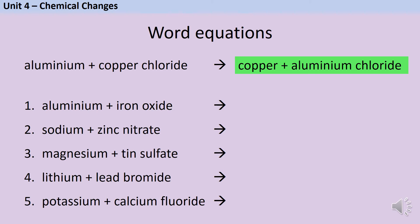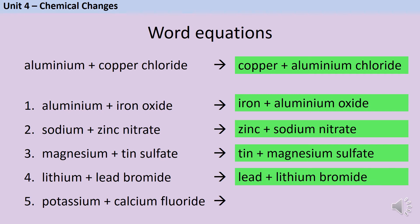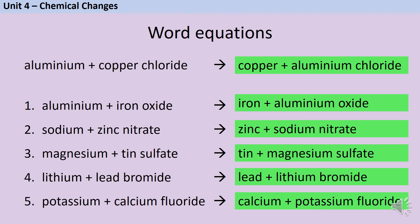Pause the video and complete each of the next five word equations. Aluminium reacts with iron oxide to make iron and aluminium oxide. Sodium reacts with zinc nitrate to make zinc and sodium nitrate. Magnesium reacts with tin sulfate to make tin and magnesium sulfate. Lithium reacts with lead bromide to make lead and lithium bromide. And potassium reacts with calcium fluoride to make calcium and potassium fluoride. It doesn't matter which way round you've written the two products, as long as you've got them both right.